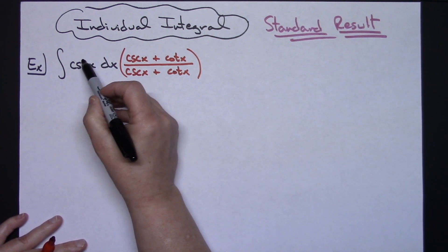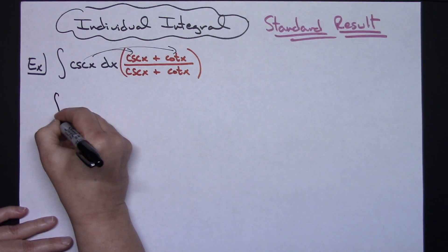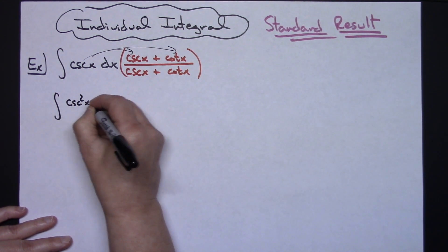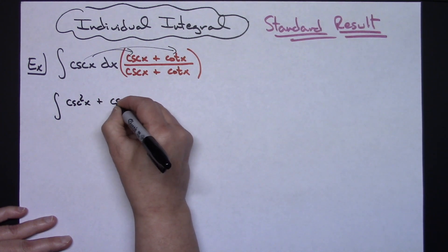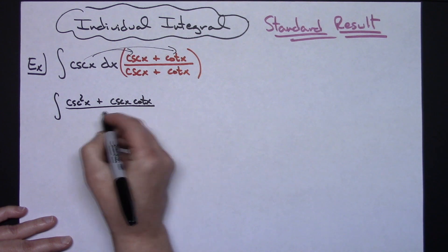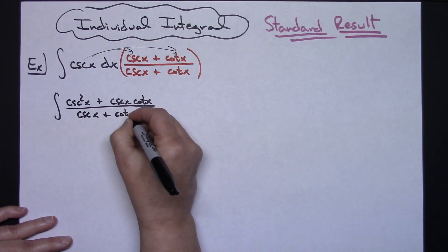I'll take this cosecant and distribute on top. So I have the integral of cosecant squared x plus cosecant x cotangent x, all over cosecant x plus cotangent x, dx.